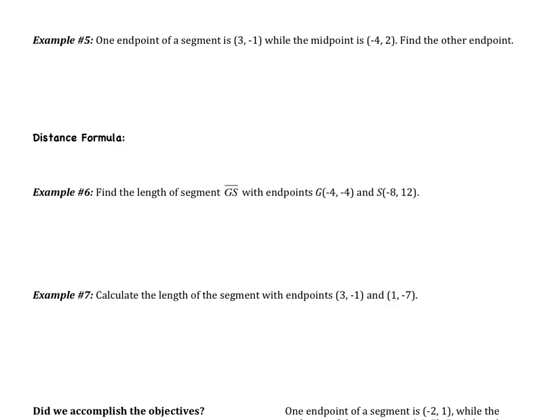We have one more example using the midpoint formula, then we move on to distance. Example 5: one endpoint is (3, negative 1), while the midpoint is (negative 4, 2). Find the other endpoint. We definitely need to draw a picture because this time we have something different — I have a segment, one endpoint is (3, negative 1), and they give me the midpoint (negative 4, 2), but they don't give me the other endpoint. We're still going to use the midpoint formula, but it's going to be a little different.